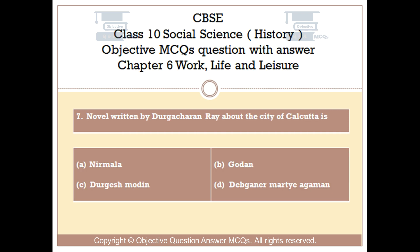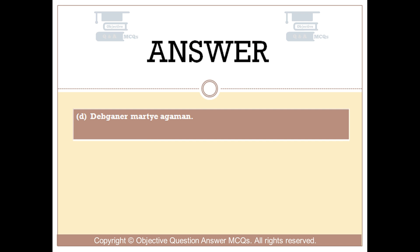Question number 7: The novel written by Durga Sharan Ray about the city of Calcutta is — Option A: Nirmala. Option B: Godan. Option C: Durjish Modan. Option D: Deebgeyner Marti Agamon. The right answer is Option D: Deebgeyner Marti Agamon.